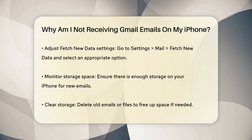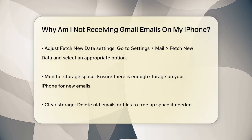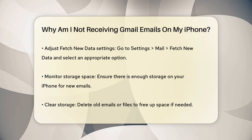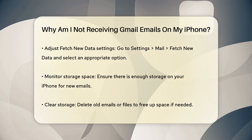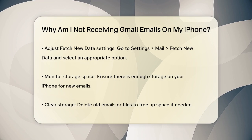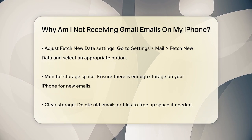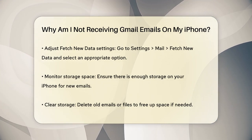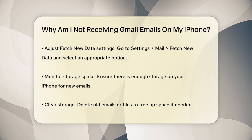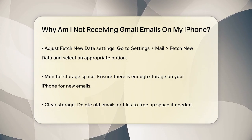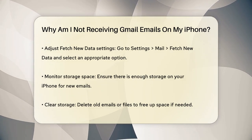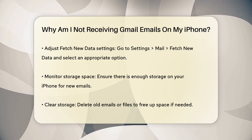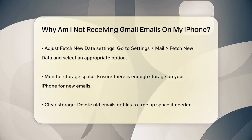Another common issue is with sync settings. Your email app might not be syncing correctly with the server. Check your email app's sync settings and ensure it's set to automatically fetch new emails. You can do this by going to Settings, then Mail, and tapping on Fetch New Data. Choose a setting like Automatically, or set a schedule for how often the mail app fetches data.